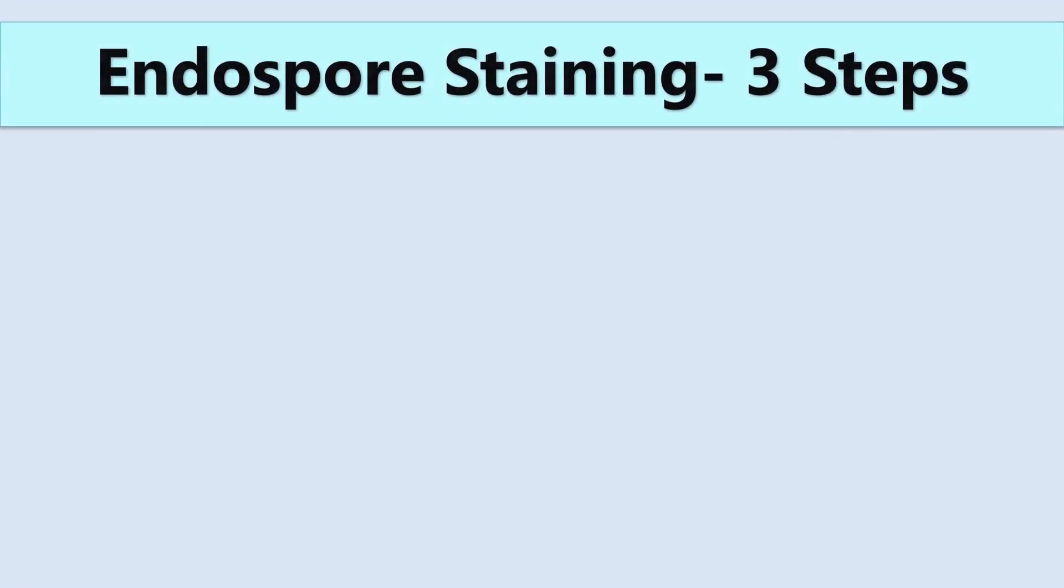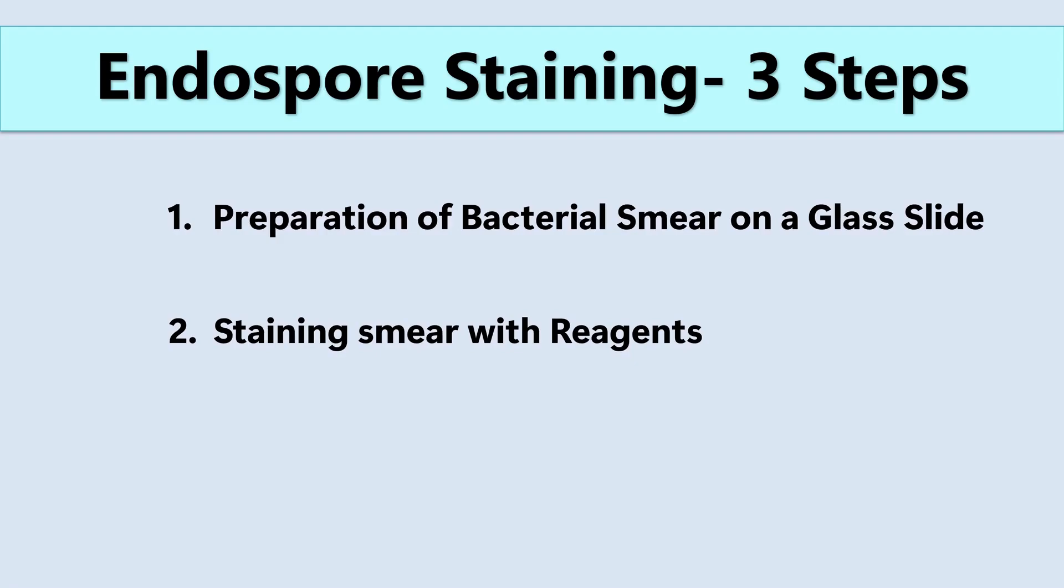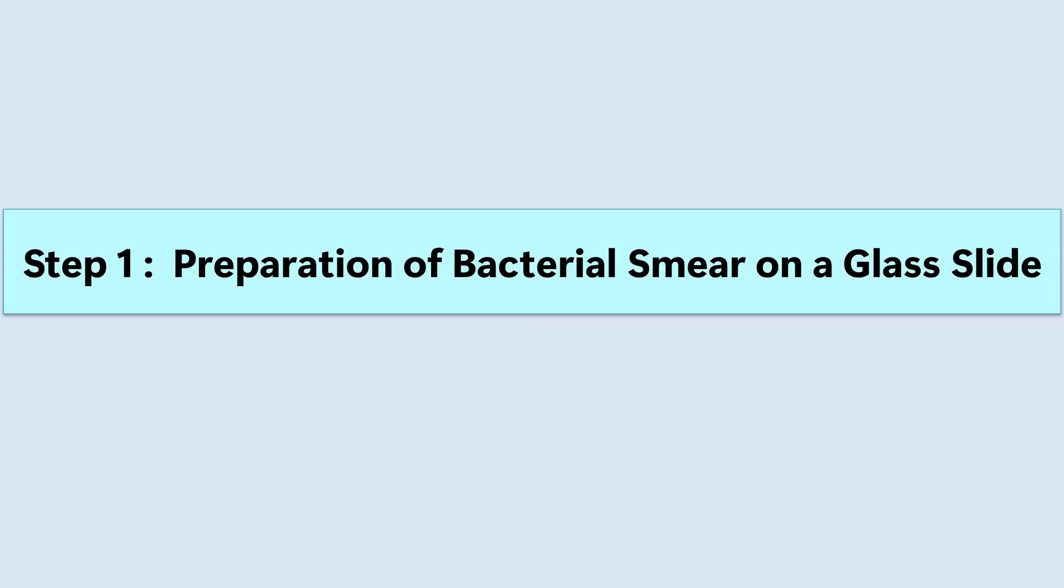Endospore staining is done in three steps. Step 1 is the preparation of bacterial smear on a glass slide. Step 2 is the staining with reagents. And step 3 is slide observation under the microscope. Now let's do step 1, preparation of bacterial smear on a glass slide.